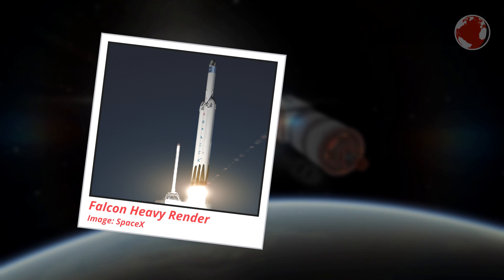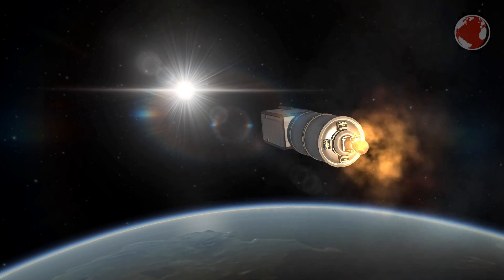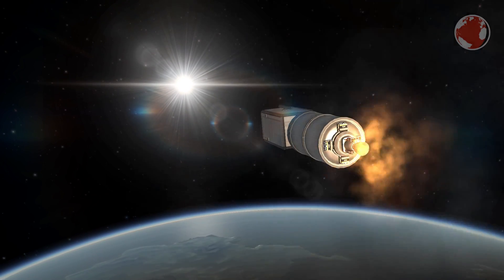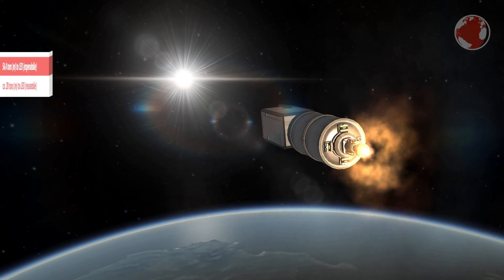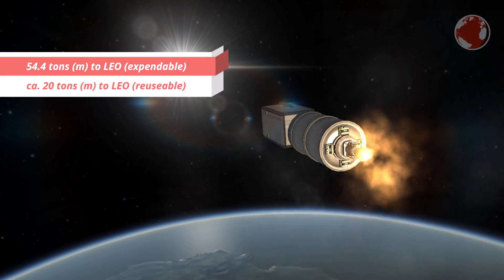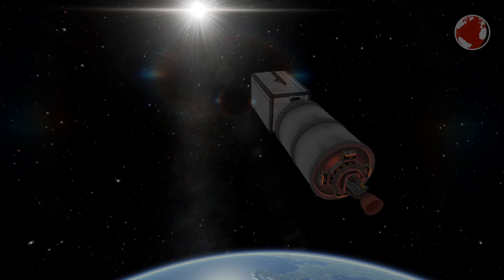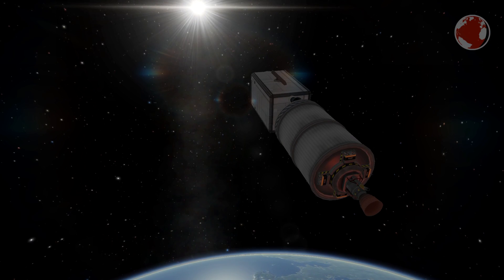But even a Falcon Heavy has its limits, and shooting a heavy payload to Mars, for example, would lead to at least one expendable core booster. The SpaceX website states an expendable Falcon Heavy could lift 52 tons to Earth orbit, but that is of course only a figure to compare to other rockets. At least at this point, there is no way to mount 52 tons on the upper stage.